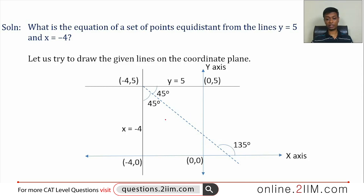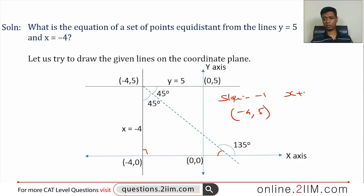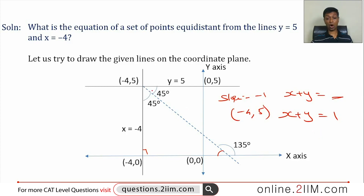This is a 45-degree line. The angle this line makes with the x-axis is 135 degrees — since 45 + 45 = 90, the remaining angle is 135 degrees. The slope of that line is tan(135°) = -1. The line passes through (-4, 5) with slope -1, and should be of the form x + y = something. Substituting x = -4 and y = 5, we get the equation x + y = 1. All points on the line x + y = 1 are equidistant from both lines.